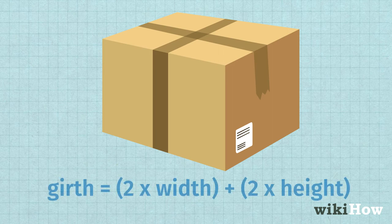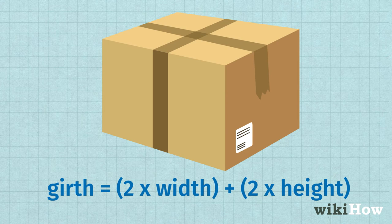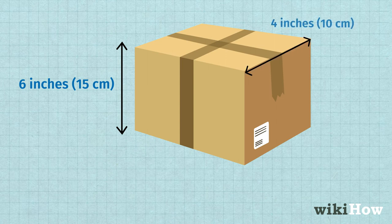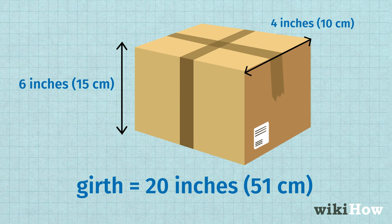If you need to find the girth of the package, multiply the width and the height times 2 and add both of the resulting numbers together. For instance, if your package is 6 inches (15 centimeters) high and 4 inches (10 centimeters) wide, the girth would be 20 inches (51 centimeters).